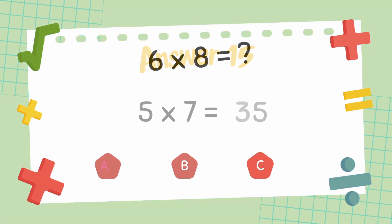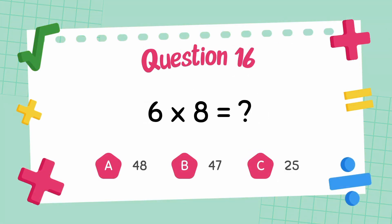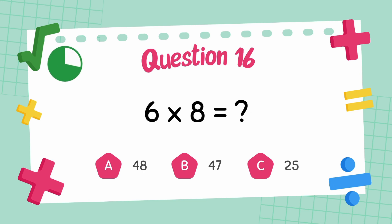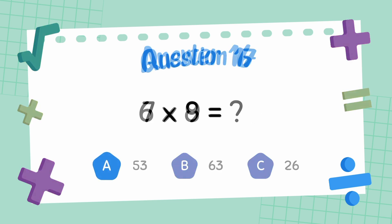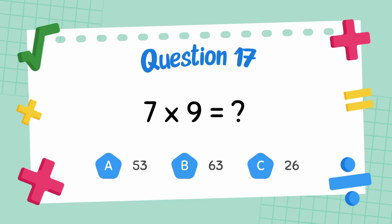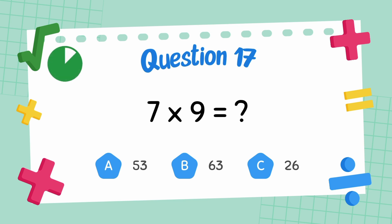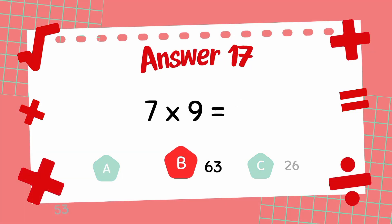What is 6 multiply 8? The answer is 48. What is 7 multiply 9? The answer is 63.